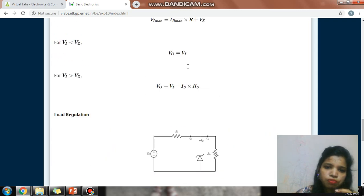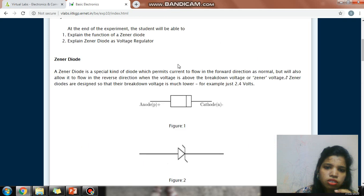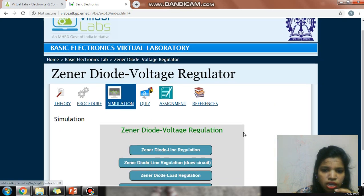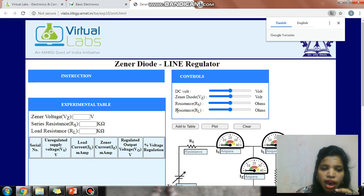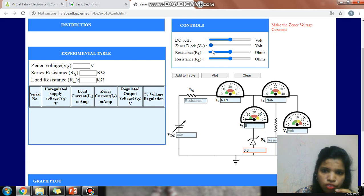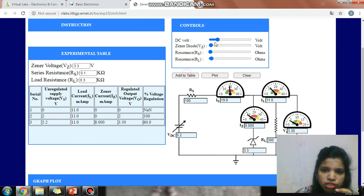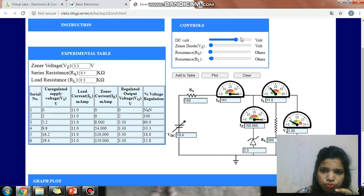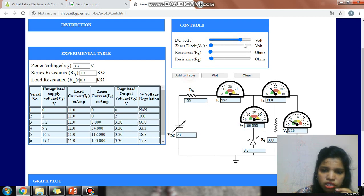Now in simulation, Zener diode line regulation: as we know in line regulation, RS is fixed, RL is fixed. First of all, the Zener voltage we have to fix depends on you. Now we have to vary the input voltage by a slider. You can vary this, add to the table, and you can note down around seven to eight values.